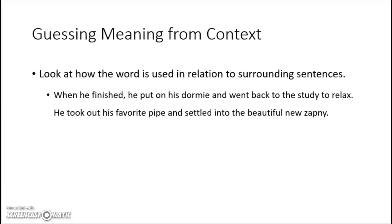The last skill is to look at how the word is used in relation to surrounding sentences. So we don't only look at the relationship between the word you don't know and the words around it in one sentence, but also how it relates to other sentences. For example: when he finished, he put on his dormi and went back to the study to relax. He took out his favorite pipe and settled into the beautiful new zapni. When we were trying to find out if the zapni was used inside or outside, we look at the sentence before it — he put on his dormi and went back to the study — and the study is a room inside the house.